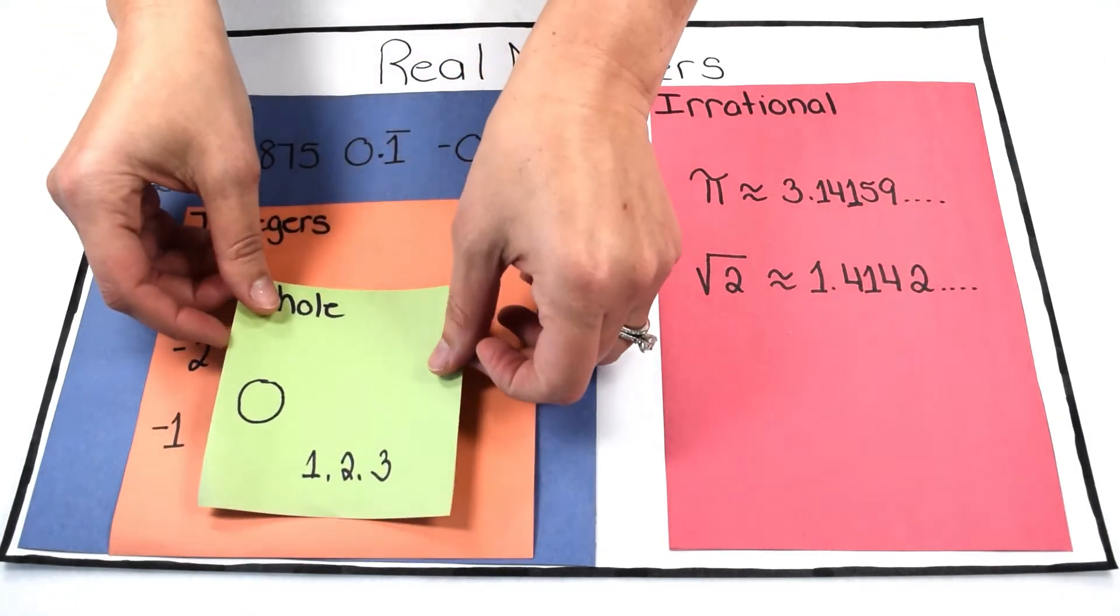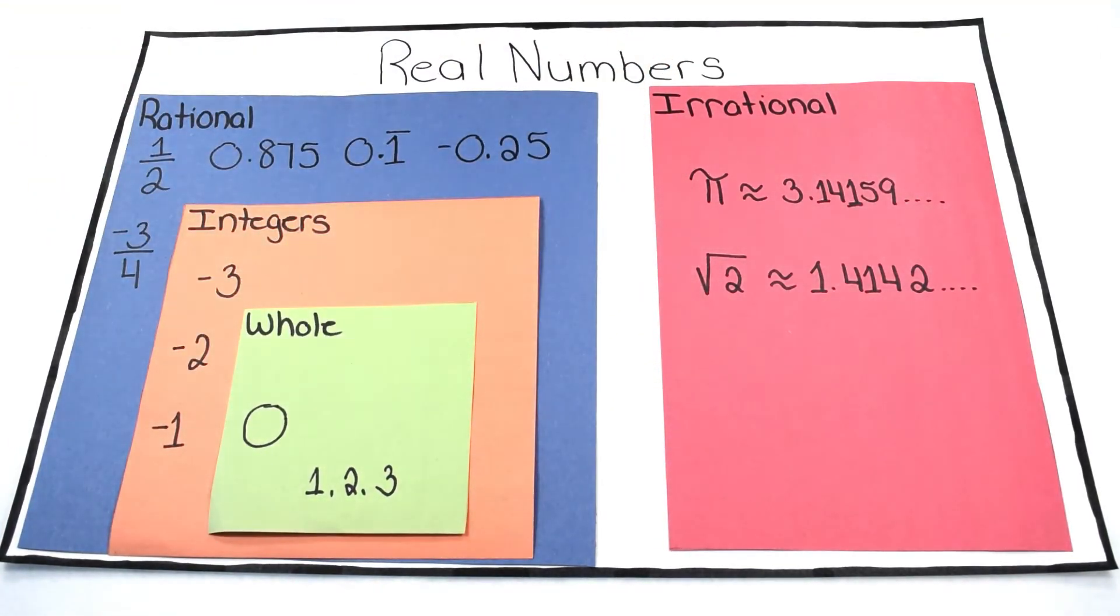Integers can then be broken further down into the subcategory of whole numbers. Whole numbers include our positive whole numbers, as well as zero.